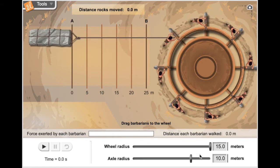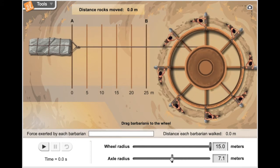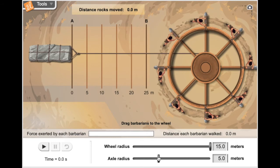Let's try this again, but let's reduce the radius of the axle. Now the wheel-to-axle ratio is 3.